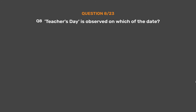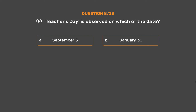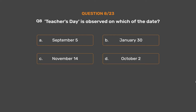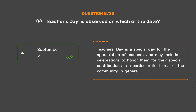Question No. 8. Teacher's Day is observed on which date? Option A, September 5th; Option B, January 30th; Option C, November 14th; Option D, October 2nd. The correct answer is Option A, September 5th. Teacher's Day is a special day for the appreciation of teachers and may include celebrations to honor them for their special contributions in a particular field, area, or the community in general.